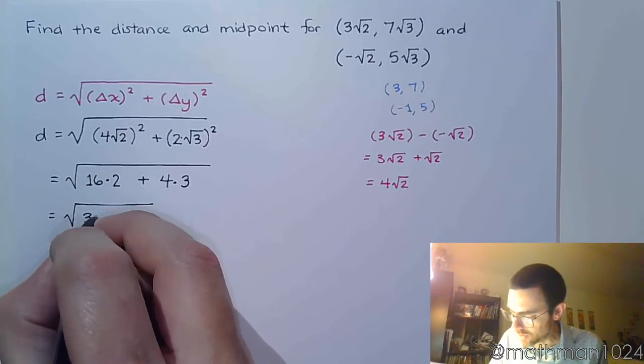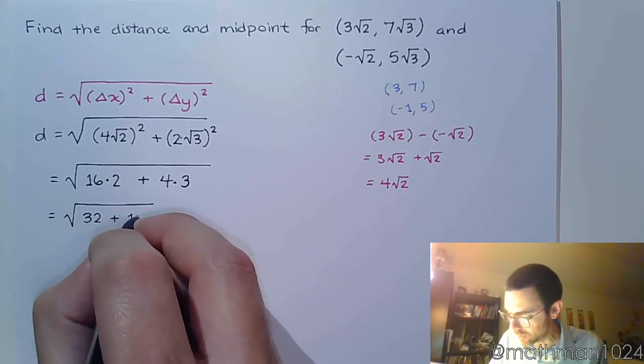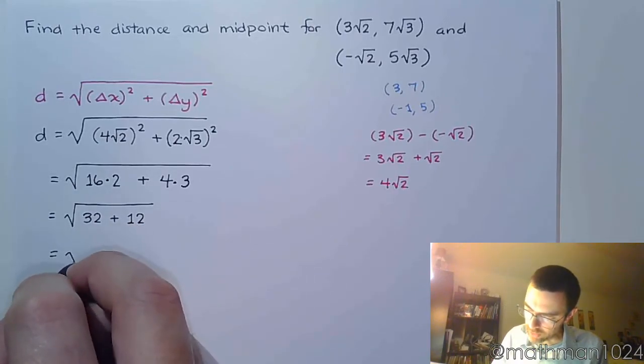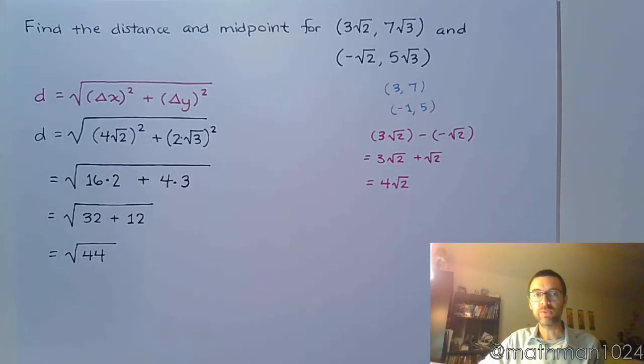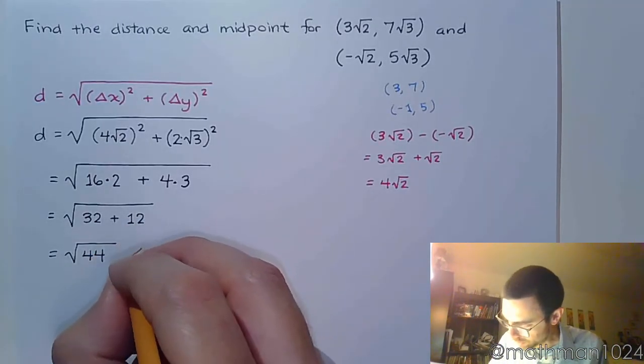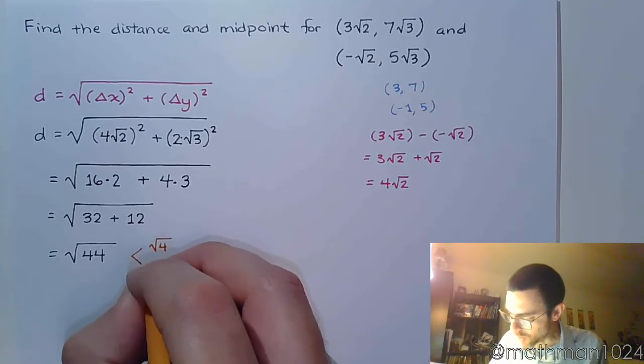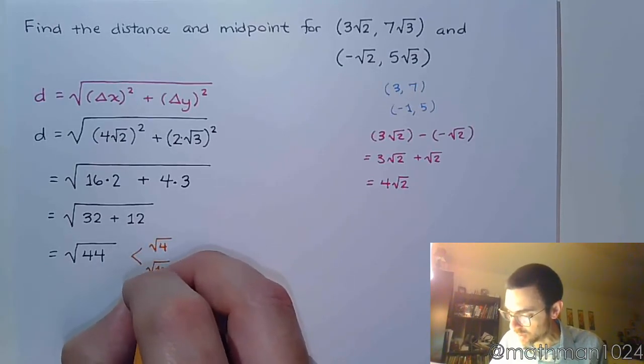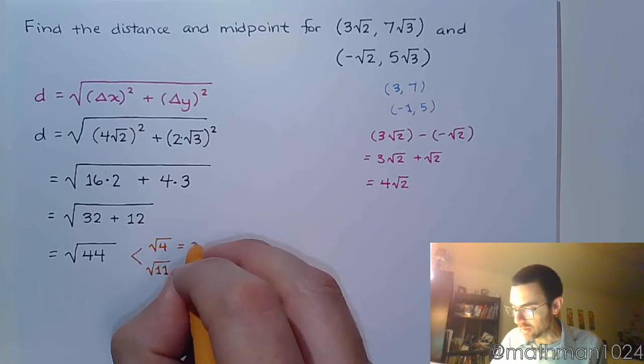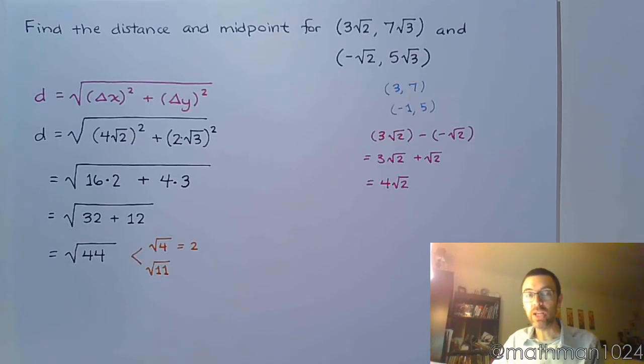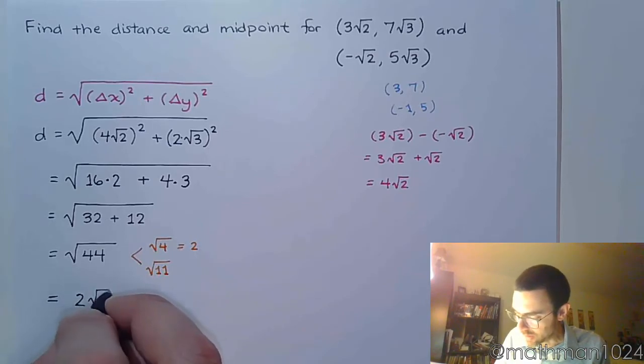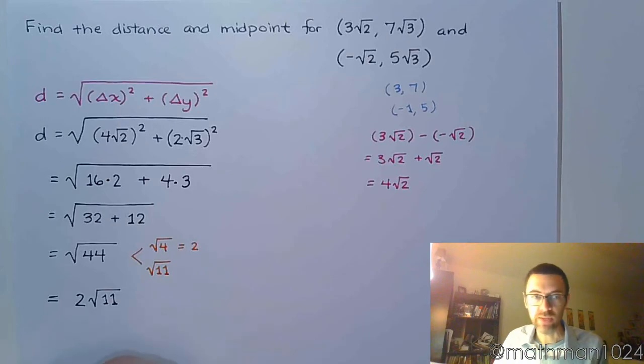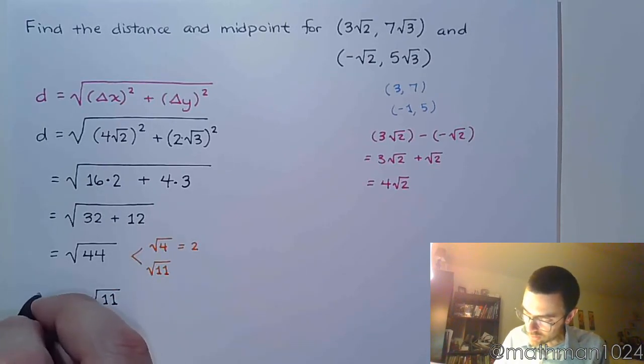16 times 2 is 32. 4 times 2 is 12. Putting these guys together, we get 44 inside the square root. And we want to try to simplify this. And 44 is going to break down as the square root of 4 times the square root of 11. The square root of 4 equals 2, so that when it comes to your final simplified answer, you know that 2 is outside the radical, and you still have the square root of 11. So this is your distance.